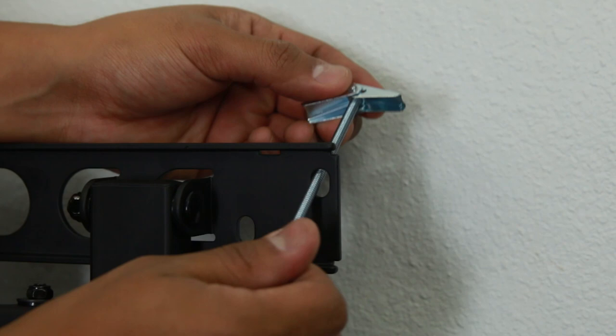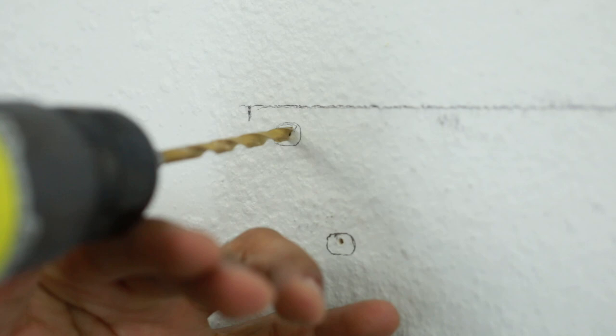When you're using toggle bolts, you have to thread the screw through the mount before they're installed into the wall. Whether you're drilling straight into the drywall or you're drilling into the stud, make sure you're using the right size drill bit to pre-drill into your wall. The packaging will indicate which drill bit to use.